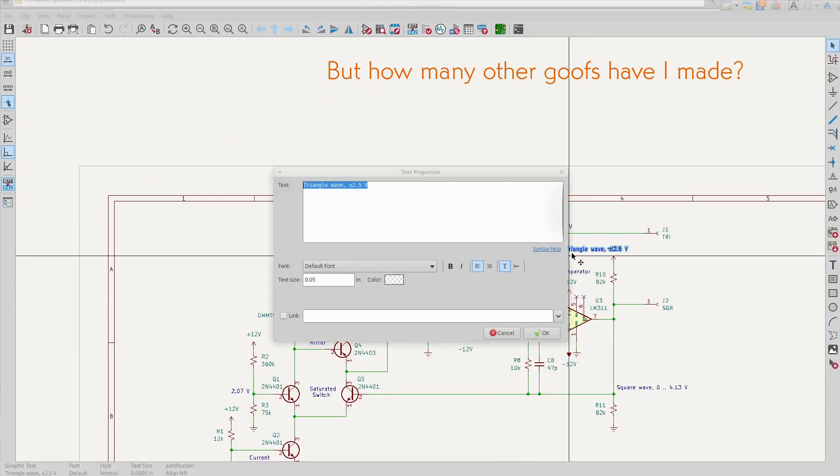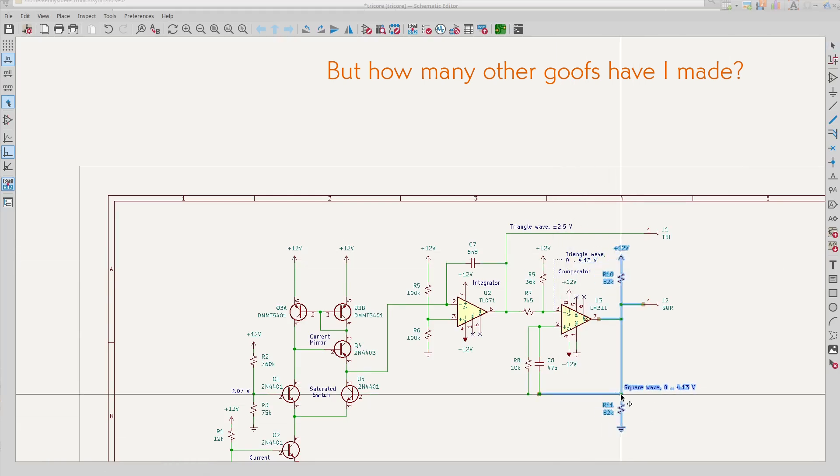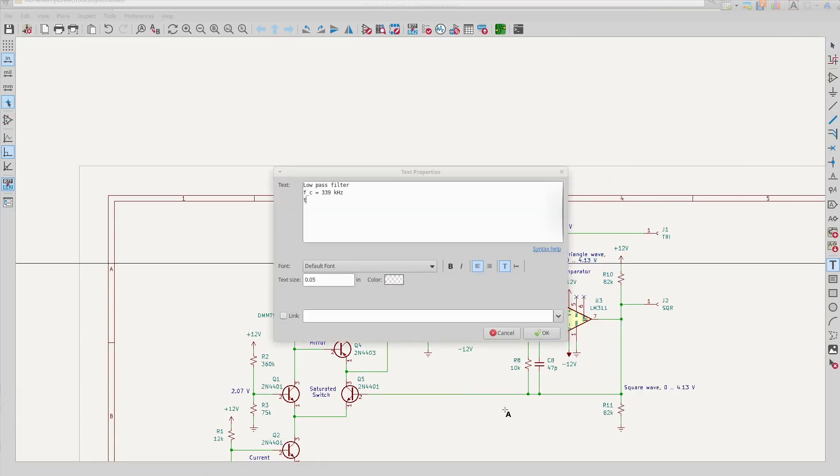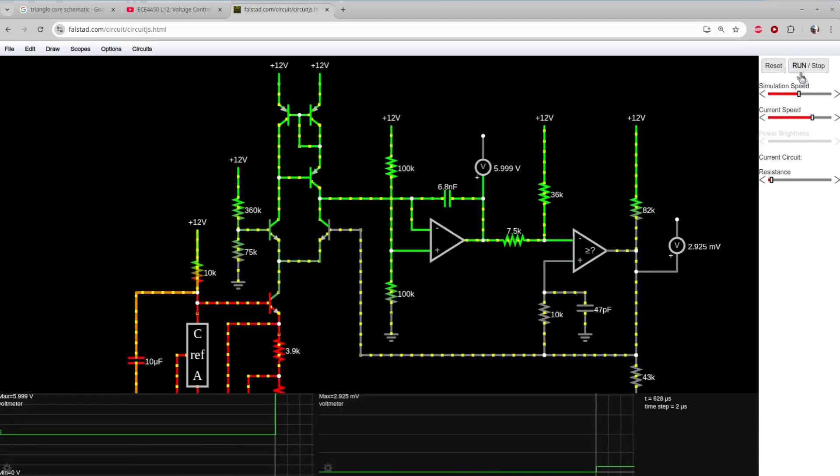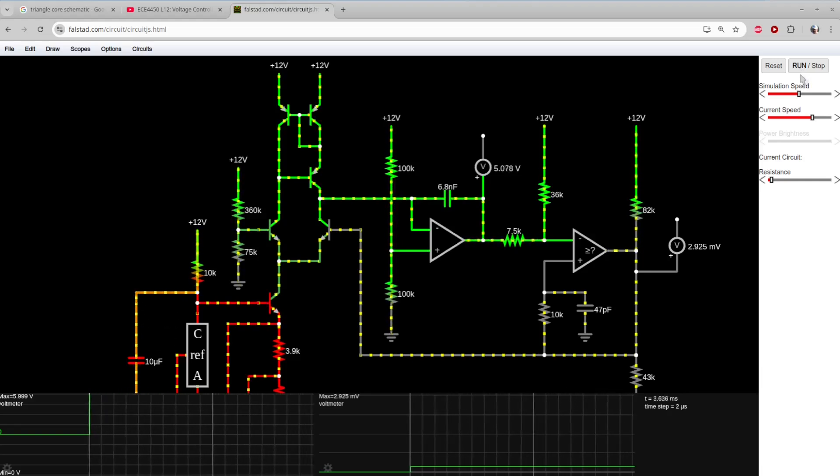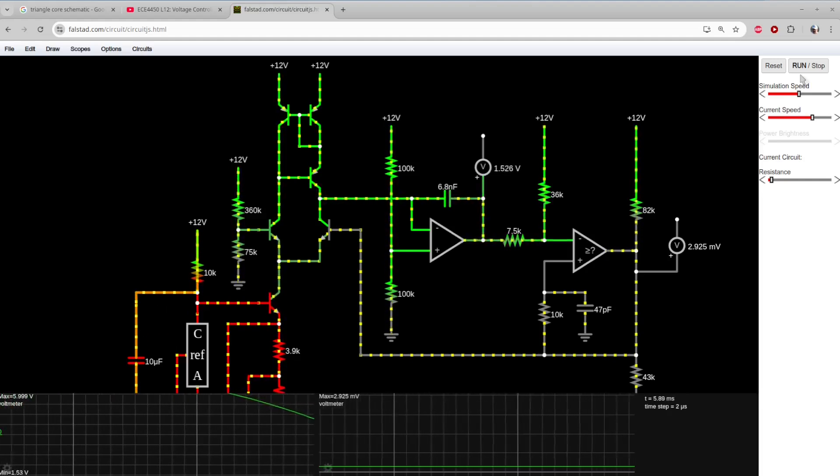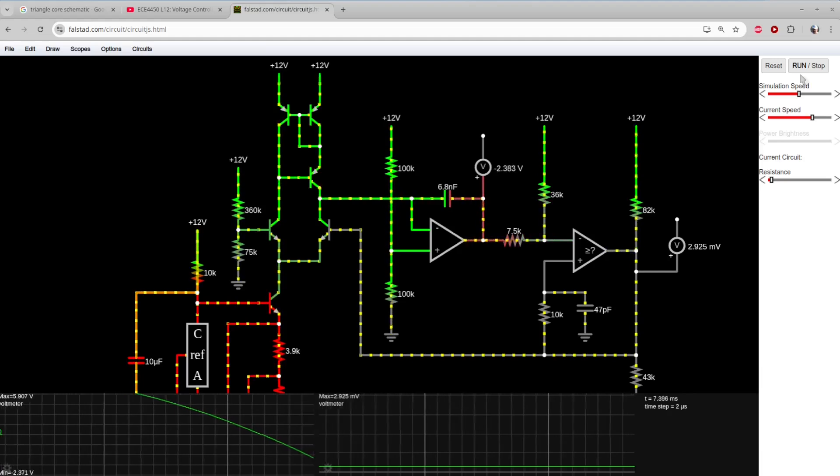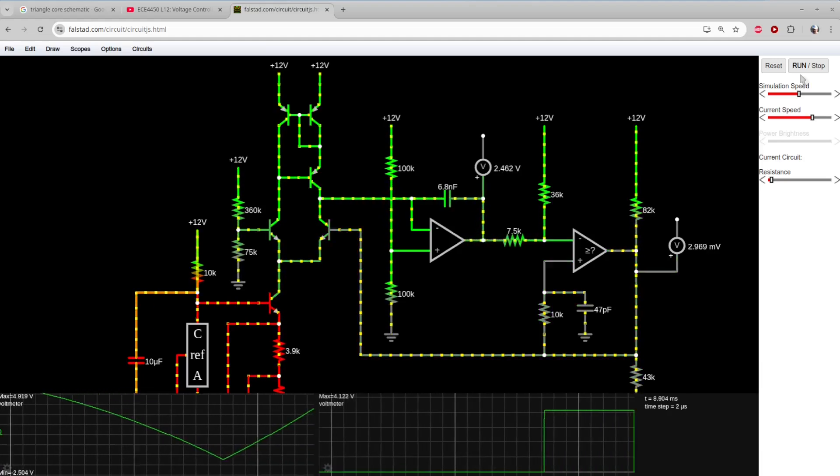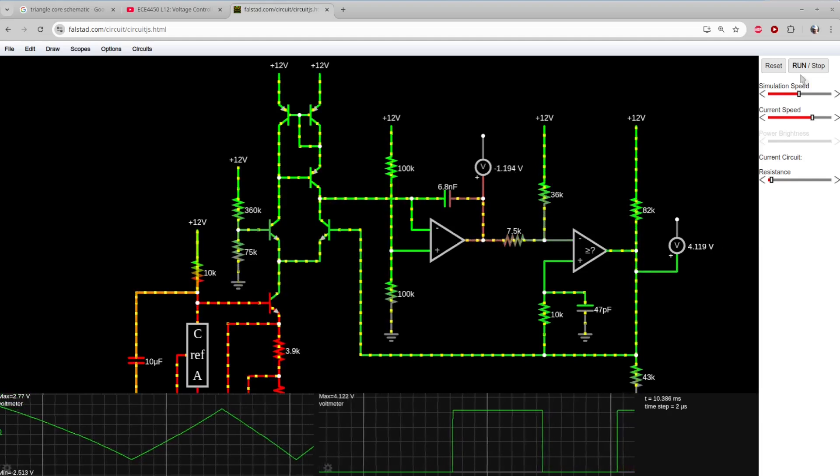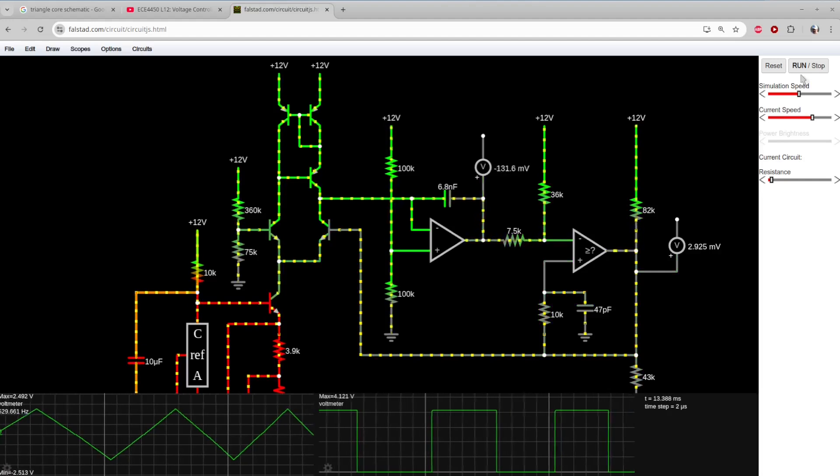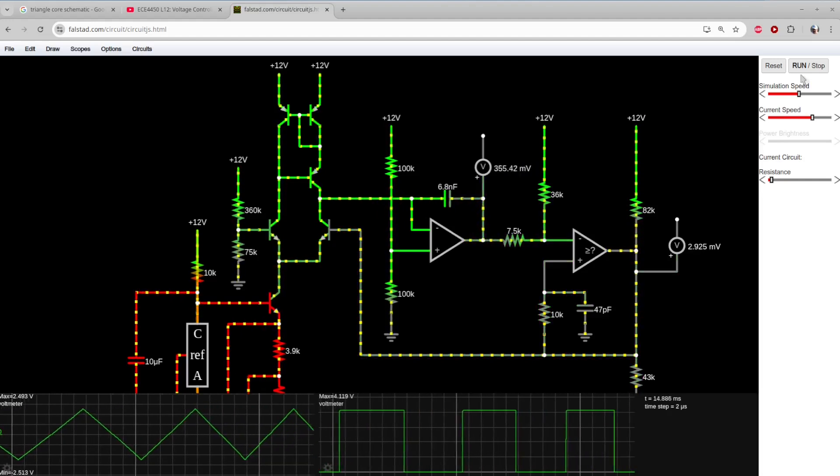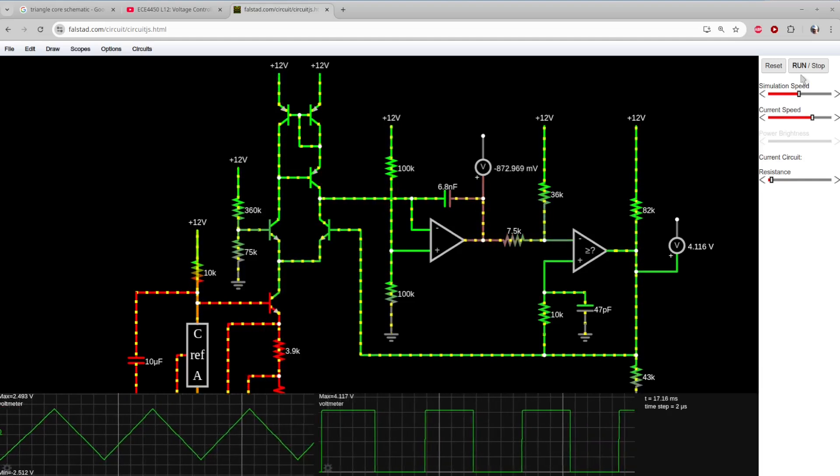It needs to be at half the 4.14 logic high voltage, or 2.07 volts. The Python script gives me 75K and 360K as suitable values. Again, these can be high values because the currents involved are tiny. And I finally remembered to fill in the 36K on the divider after the integrator. I'll annotate a couple of points with the voltages I expect to see. Some more description, and we should be good to go. Except that I want to give myself a sanity check, so off-camera I drew the same circuit in CircuitJS. The model is on the project GitHub, of course. And it looks good. A triangle wave of plus or minus 2.5 volts, and a square wave of the 4.14 volt logic level. Let's breadboard it.